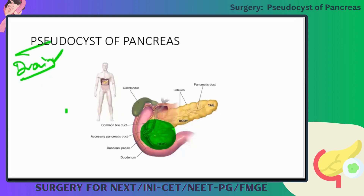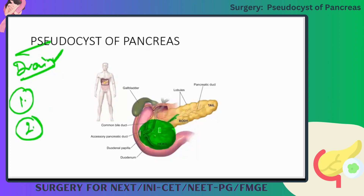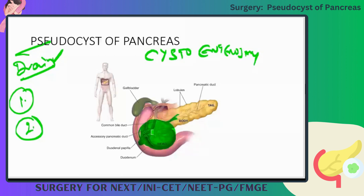Drain it inside — because it is not infected. Second reason: this is a collection of enzymes only, and there is a constant connection between the pancreas and this cyst. So if you connect it to the normal bowel, these enzymes will be delivered to the normal bowel. So we have to do a cystoenterostomy.